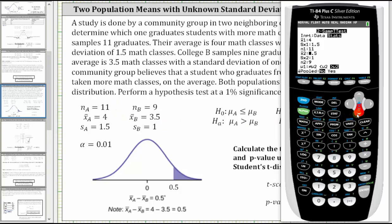X bar sub 2 is X bar sub B, which is 3.5. Down. Sample standard deviation is 1. Down. Sample size N is 9. Down. We're testing to see whether mu sub A is greater than mu sub B, and therefore we select greater than, which is the third option on the right, and press enter. And then down, pooled, we select no. Down, and down to calculate, and press enter.